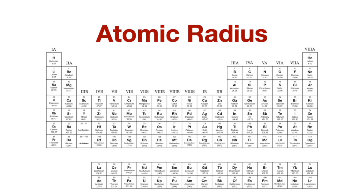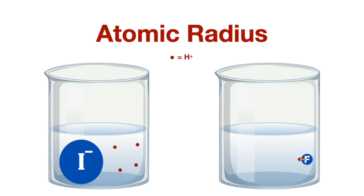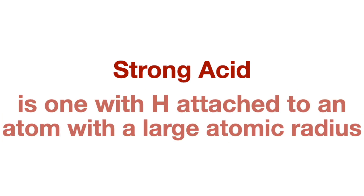Atomic radius is an even easier way to determine acid strength. Atomic radius increases as electronegativity decreases. So in our example with fluorine, chlorine, bromine, and iodine, iodine was the least electronegative and therefore has the biggest atomic radius. This means iodine has a lower electronegativity and therefore a larger atomic radius, forming a longer bond to the hydrogen, which is a weaker bond and more likely to break and release protons into solution, making it more acidic. Therefore, a strong acid is one where hydrogen is attached to an atom with a large atomic radius.